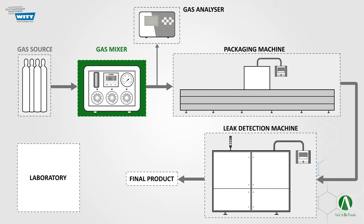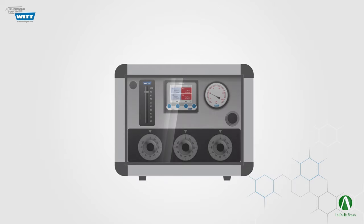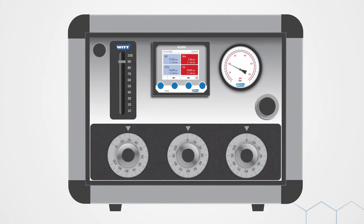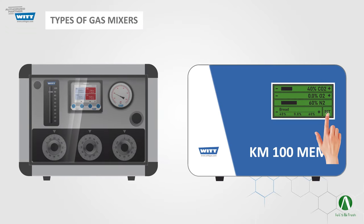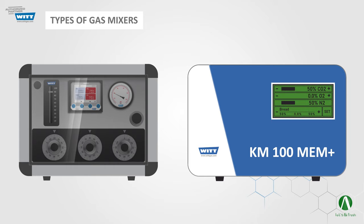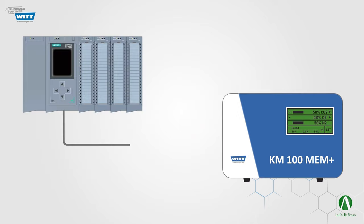To achieve this, we can adjust the gas mix percentage using different methods. For example, using mechanical dials on the mixer, or using electromechanical mixing valves. As you can see, these types of mixers can be connected to a programmable logic controller, or PLC, so they can be controlled via electrical signals.